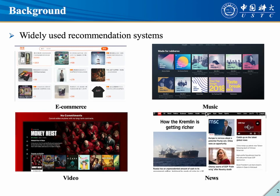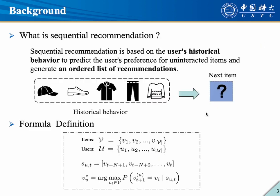With the rapid development of the internet, recommendation systems have been widely employed on various online platforms. Among these, Sequential Recommendation (SR), predicting the next item for users by regarding historical interactions as temporally ordered sequences, has attracted various attention from both academia and industry.